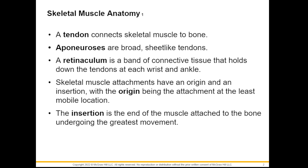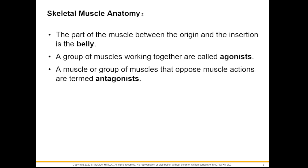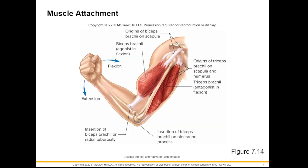Skeletal muscles also have origins and insertions. When we say origin, it is the attachment at the least mobile location or the non-movable portion, while insertion is the attachment of the muscle to the bone which is mobile. The part of the muscle between the origin and insertion is called the belly. When muscles work together to perform an action we call them agonists, while muscles which oppose the actions of each other are called antagonists.